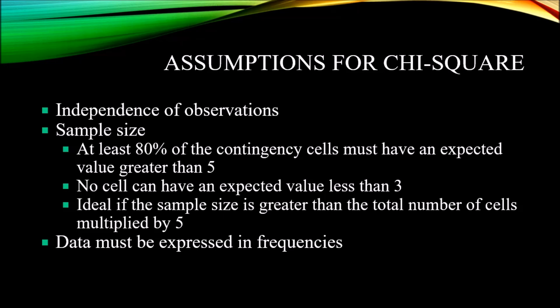The next assumption deals with the sample size, and there are a few rules here. We referred in the last slide to the idea of contingency tables, and we have a certain number of cells. In the test of independence, it was a three by two—fall, spring, and summer by pass and fail. In the goodness of fit example, it was two by two—heads and tails, and observed and expected. Each one of those counts is in a cell.